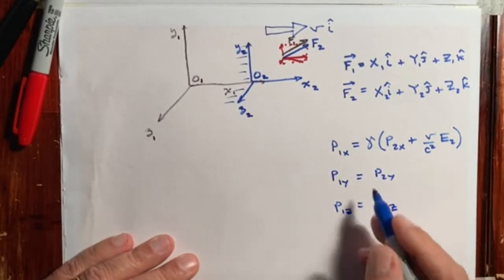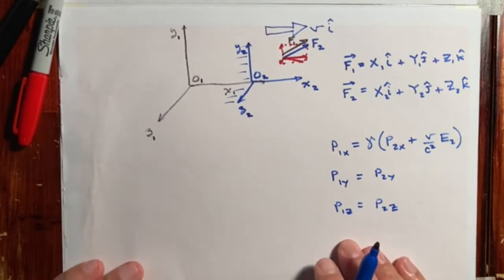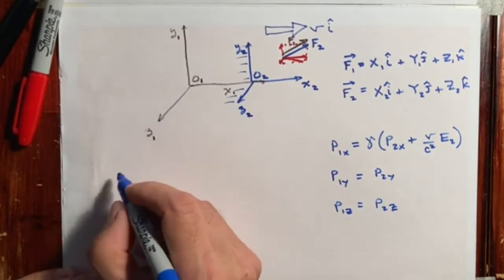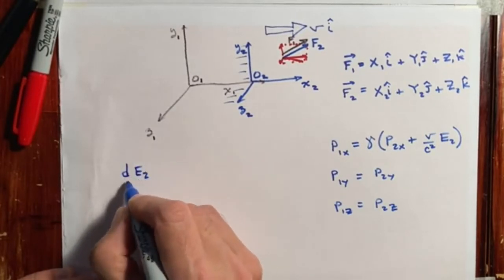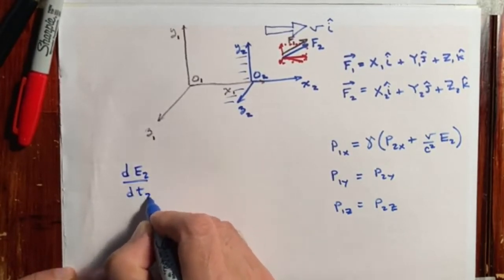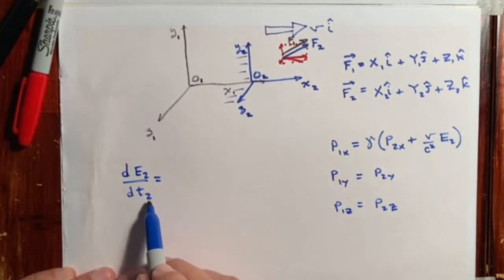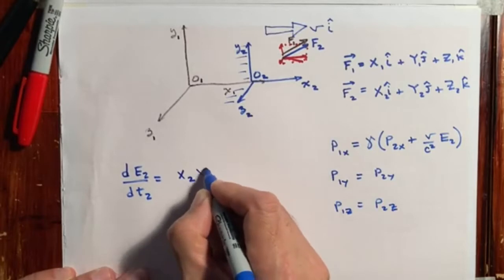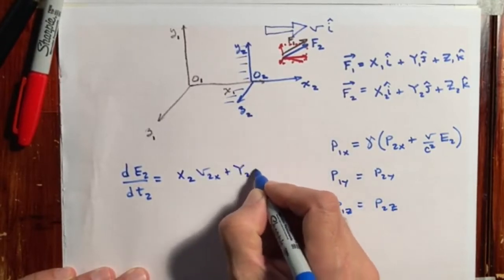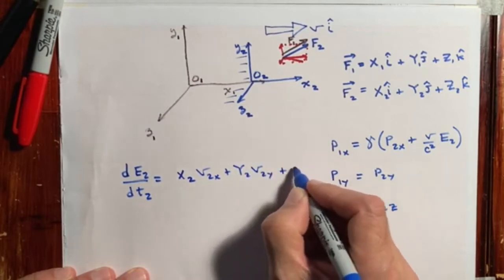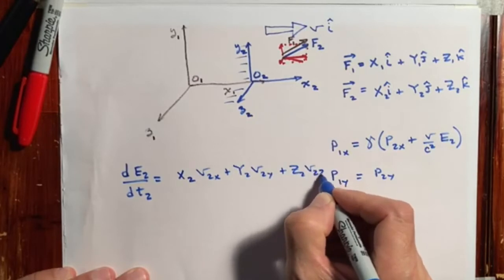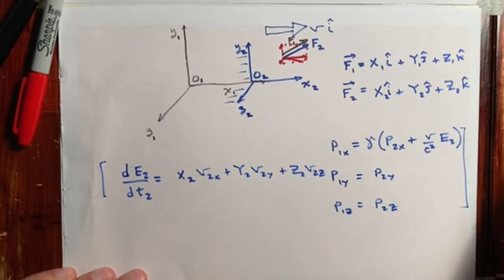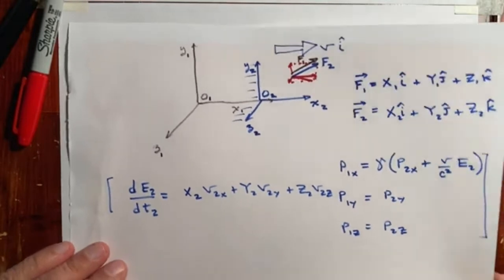There is a fourth equation relating energy that we won't write here, as it would take us too far aside. The other equation we're going to be using — also not derived here — is that the derivative with respect to time in the second frame of reference of the energy E2 equals X2 times v sub 2x plus Y2 times v sub 2y plus Z2 times v sub 2z. These results will be used but not derived in this work.